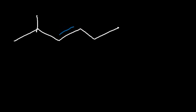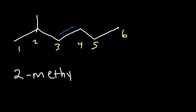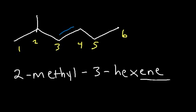Try this example. If we count from the left, the alkene will be on carbon 3. If we count from the right, it would still be on carbon 3. However, the methyl will be on carbon 5 counting from the right, but on carbon 2 counting from the left. So you want to count from left to right. This is going to be 2-methyl-3-hexene, since the double bond is on carbon 3 and a 6-carbon chain is hexene.